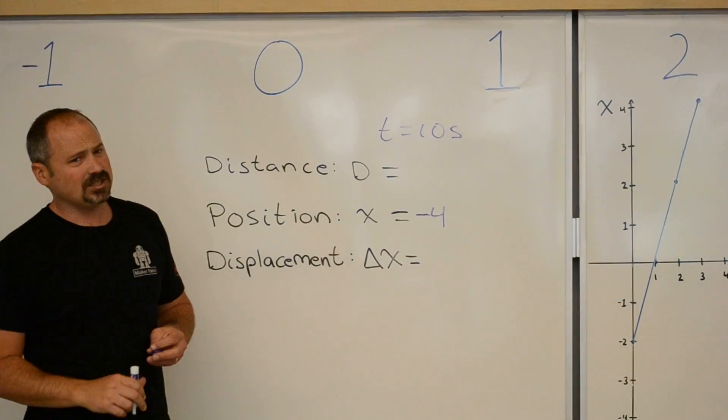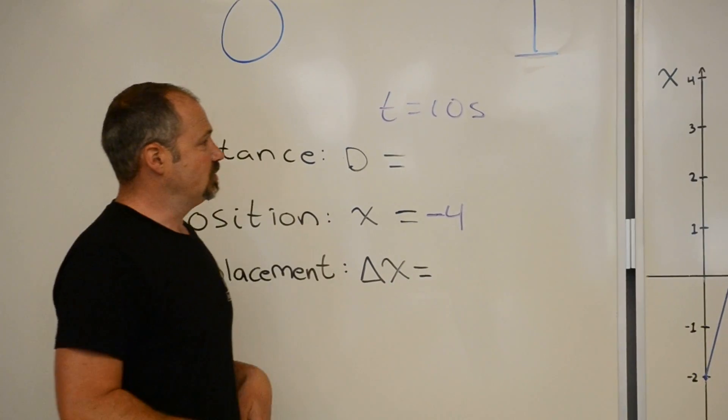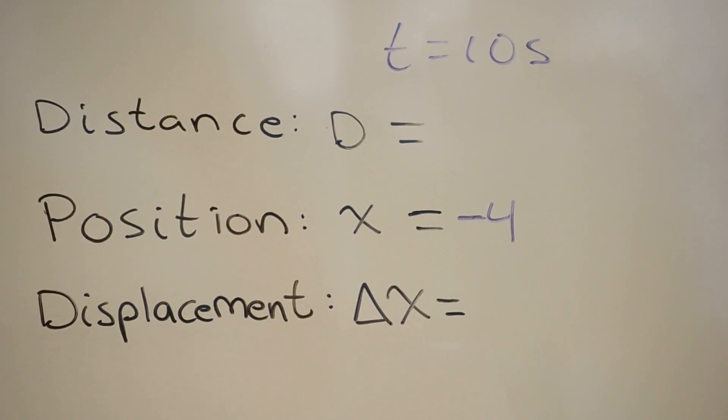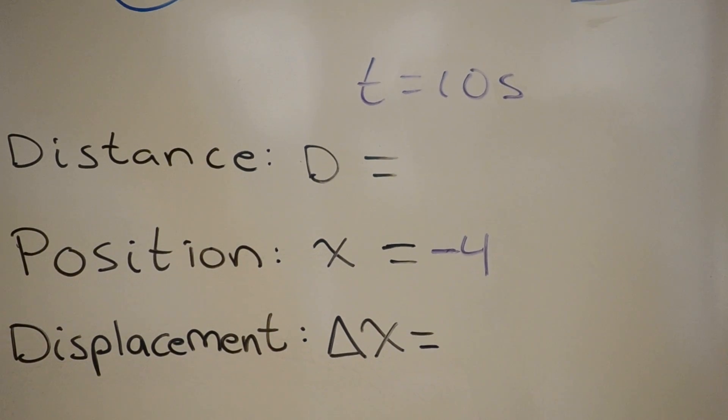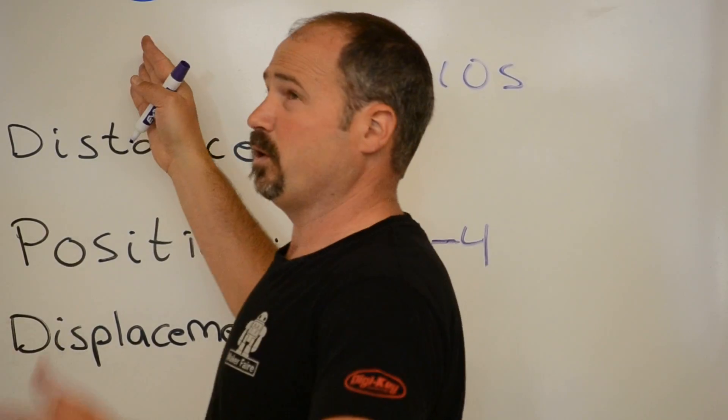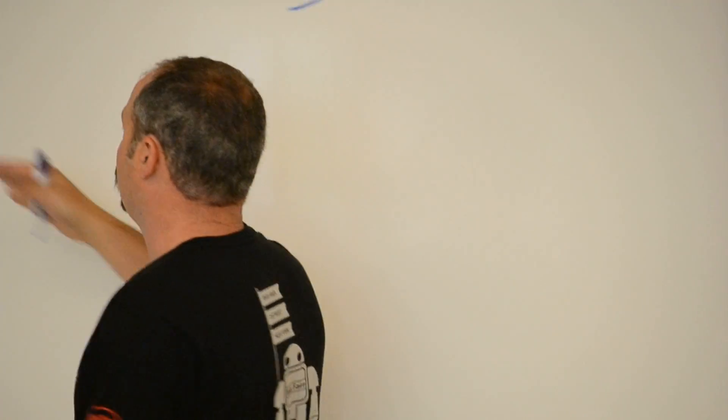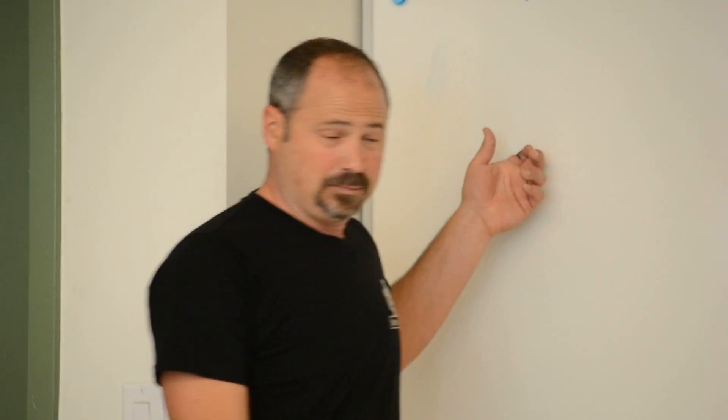And, the distance traveled. Well, I started at negative 2, then went up to 4. That's 6 steps. Then, down to 0. So, that's 4. 6 plus 4 is 10. And then, over to negative 4. Another 4 steps. 10 plus 4 is 14. So, a distance of 14.